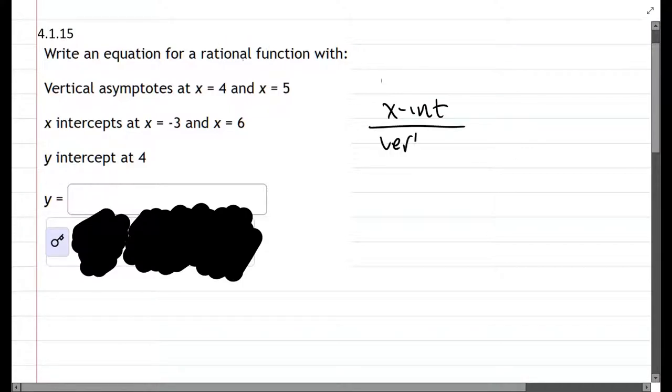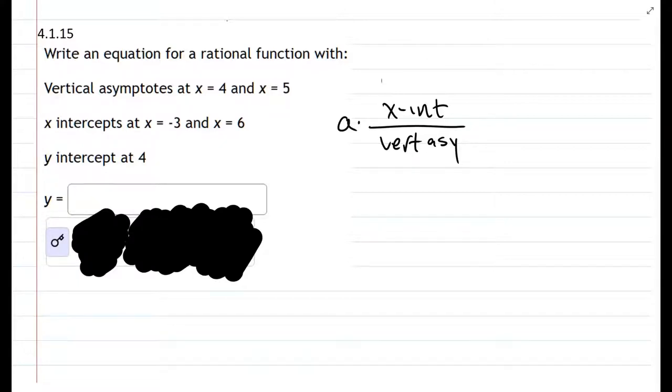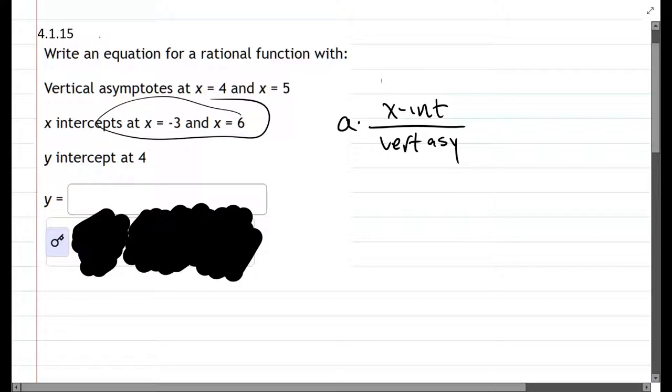Divided by your vertical asymptotes, and you can have a numerical factor in the front. I usually use letter a, and let's go ahead and figure out, they tell us right here, x-intercepts. So write them out first.